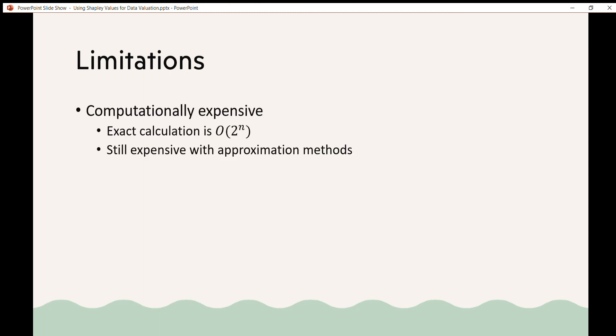Some limitations of this method. As I mentioned, this is very computationally expensive. Doing an exact calculation is exponential in terms of the number of data points. And even with approximation methods it's still very computationally expensive. Another limitation is that this only works for a fixed dataset. You can't calculate a value for a new point without recalculating the values for the rest of the dataset.